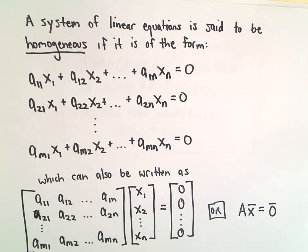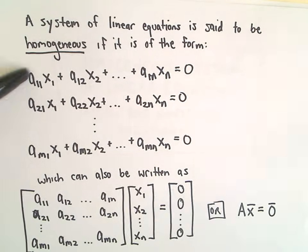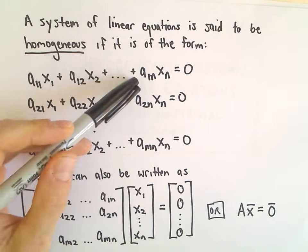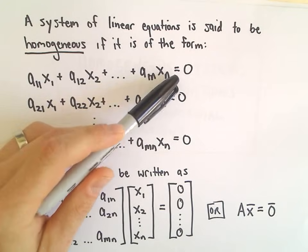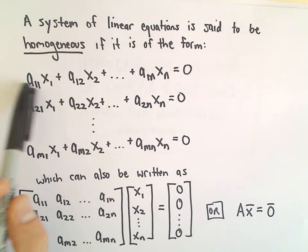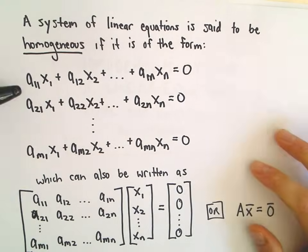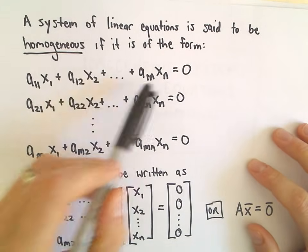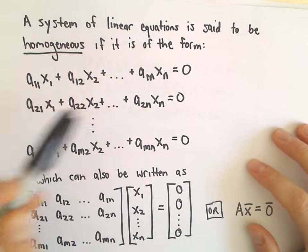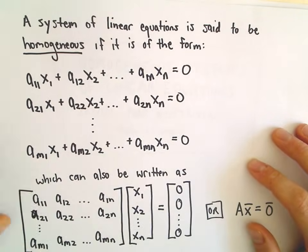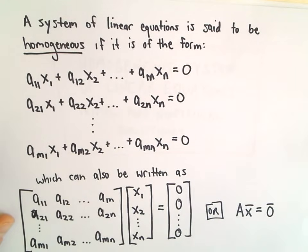We say a system of linear equations is homogeneous if it's of the form: a sub 1,1 times x sub 1 plus a sub 1,2 times x sub 2, plus dot dot dot, a sub 1,n times x sub n equals 0. This is our first row, then our second row, down to the mth row. Basically we just have a bunch of linear equations with variables multiplied by real number coefficients, and it's homogeneous if all the constants on the right side are 0.